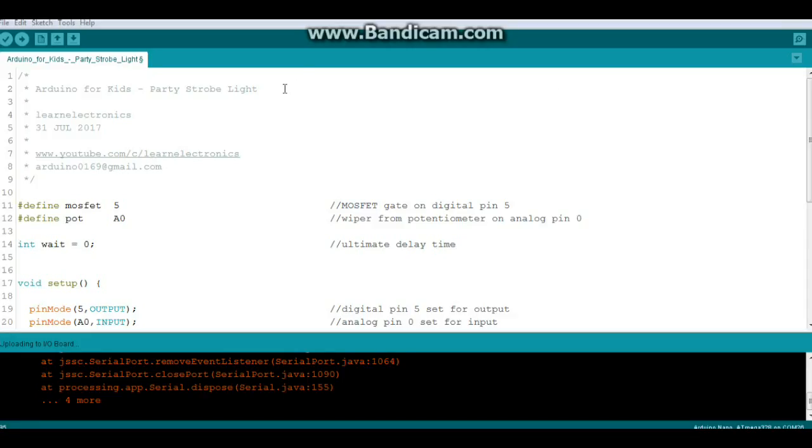Alright, so here is the code for the Arduino for kids party strobe light. First we are going to do two defines. We are going to define our MOSFET as digital pin 5 and our pot analog pin 0, and create a global integer variable called weight that we will use for our delay.